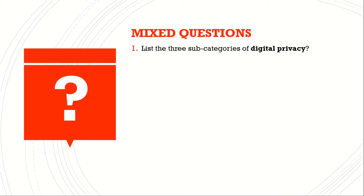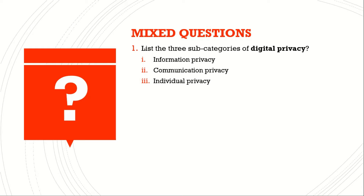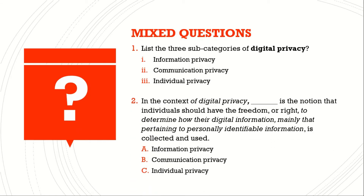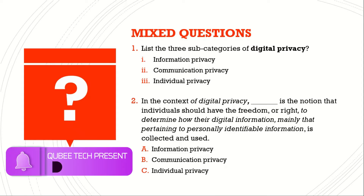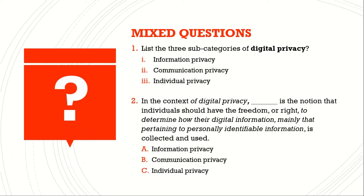Question number one: List the three subcategories of digital privacy. Answer: Information privacy, communication privacy, and individual privacy. Question number two: In the context of digital privacy, blank is a notion that individuals should have freedom or right to determine how their digital information, mainly that pertaining to personally identifiable information, is collected and used. Answer: Information privacy.